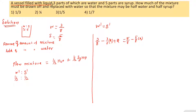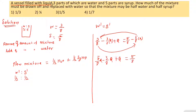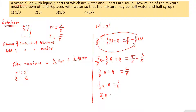Q is equal to 5 by 8 minus 3 by 8, which gives 2 by 8. So Q plus 2 by 8 is equal to 1 by 4. Cross multiplying, we get Q equal to 1 by 4.